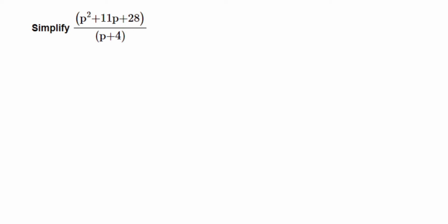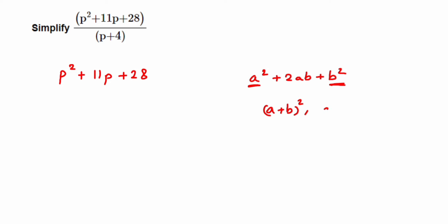Looking at the numerator, we can either apply an identity or use splitting the middle term. The numerator is p² + 11p + 28. For the identity (a + b)² we need a² + 2ab + b² — the first and last terms must both be perfect squares. Here p is squared but 28 is not a perfect square of any number, so we cannot use (a+b)², (a−b)², or (a+b)(a−b). Since we have three terms, none of these identities apply, so we use splitting the middle term.